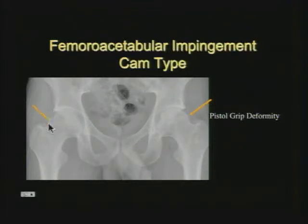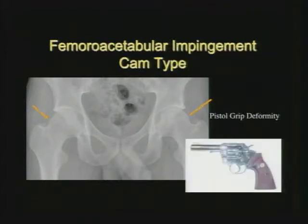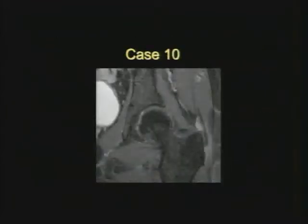Look for bumps at the femoral head-neck junction, but be careful — some people have them and are asymptomatic, so we can't call it impingement definitively. Some are just born with what we call the pistol grip deformity or an exaggerated bump. A lot of it may be genetic, though slipped capital femoral epiphysis can also predispose to that.